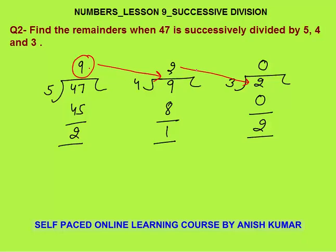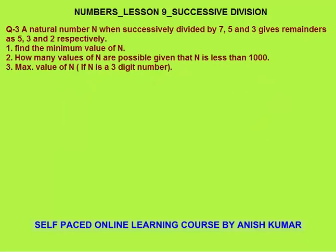Question 3: a natural number N when successively divided by 7, 5, and 3 gives remainders 5, 3, and 2 respectively. Here we need to find the number. This is a bit more difficult. We need to find the minimum value of N, and there are two more sub-questions. We don't know the number — let's say the number is N.